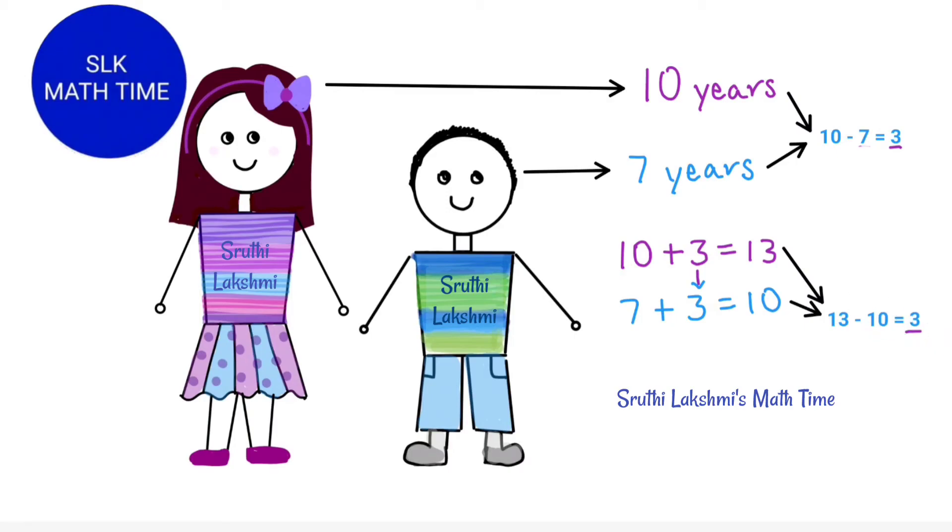No matter how much you grow older and older the age gap between you two will always remain the same which is 3. So let's just say I forgot to add the 3 to the 7. That would mean I would do 13 minus 7 which would be 6.